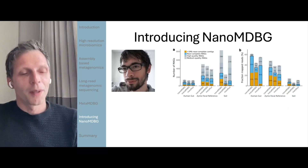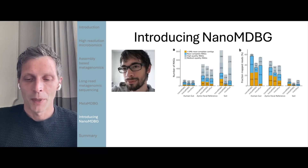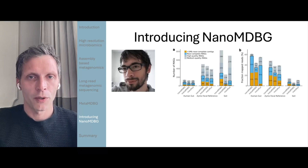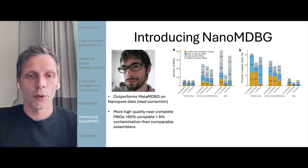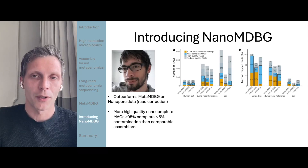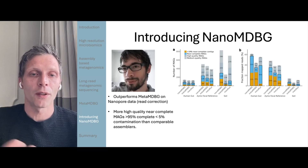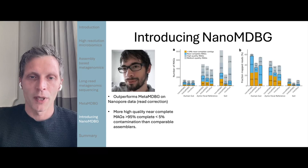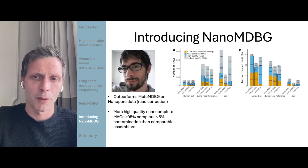Nanopore got hold of Meta-MDBG and started applying it to their own datasets and it was performing very well. However, Eitan decided that he would produce his own bespoke version for Nanopore, which involves a preliminary read error correction step to increase its performance. And it does — it outperforms Meta-MDBG on the Nanopore dataset, with more complete high-quality MAGs than Meta-MDBG and the nearest state-of-the-art assembler, Metaflye.